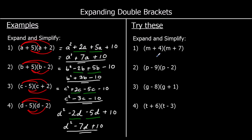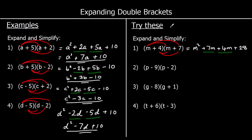Question one: multiply both of the terms in the first bracket by both of the terms in the second bracket. So m times m and m times 7, and 4 times m and 4 times 7. m times m is m squared, m times 7 is 7m — positive. 4 times m is 4m — positive. And 4 sevens are 28, positive, so plus 28. Collecting like terms: we've got m squared, 7m plus 4m is 11m, so m squared plus 11m plus 28.